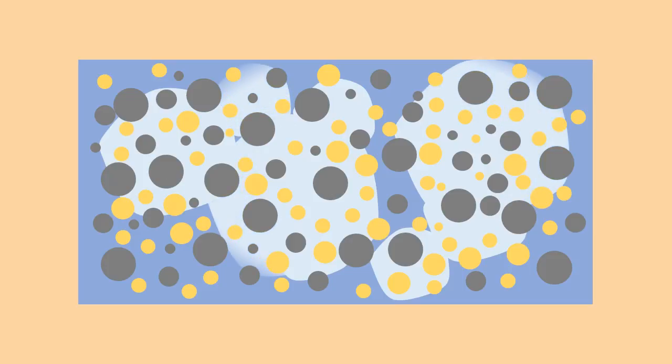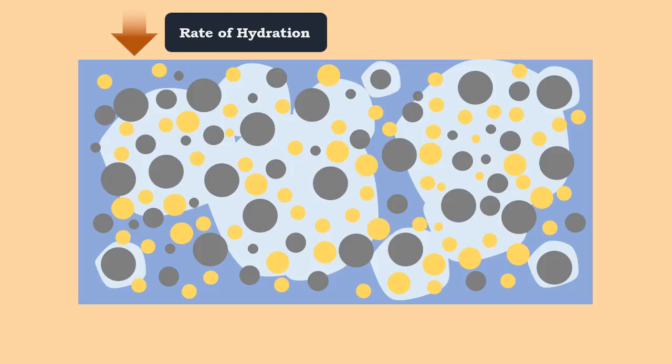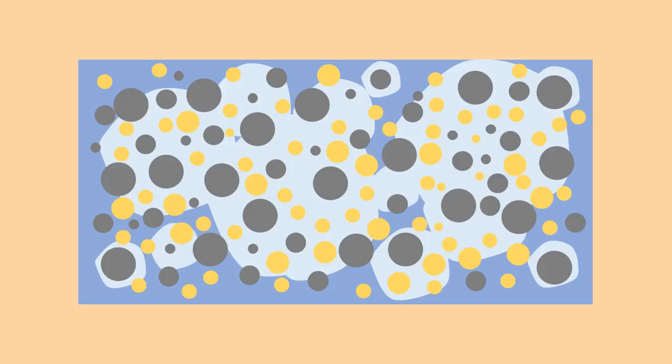As the hydration proceeds, the hydration product slowly starts to deposit on the original cement grain, thereby making the diffusion of water to the unhydrated nucleus more and more difficult. This reduces the rate of hydration. The hydration products gradually fill the space originally occupied by water.